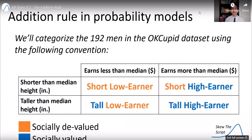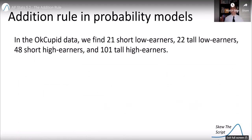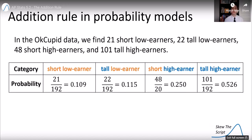So I took the data and I categorized it in this way. For the profiles that reported that they earned less than median income, I reported them as a low earner. For those who reported that they earned more, it was a high earner. For those who said they were shorter than the median height, I said short. For those who reported they were taller than the median height, I reported them as tall. Now, in the OKCupid data, with those categorizations, we found 21 people reported as short, low earners, 22 reported as tall, low earners, 48 as short, high earners, and 101 as tall, high earners.